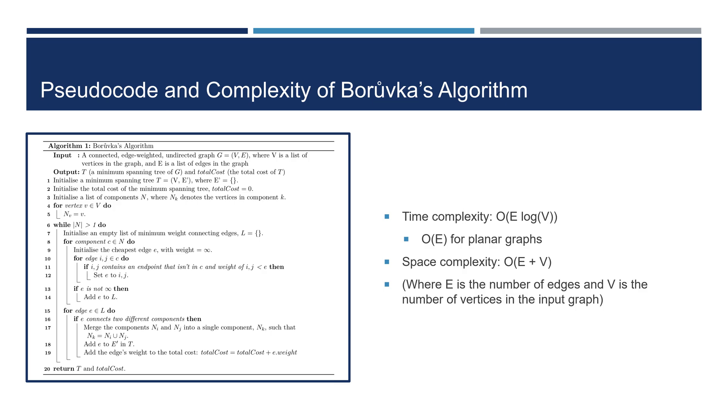The time complexity is reduced to O(E) for planar graphs. Meanwhile, the space complexity for Borůvka's algorithm is O(E + V). This is because we must keep a list of V components at the start and track a list of minimum weight connecting edges.